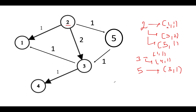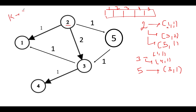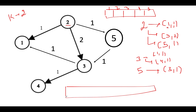Along with the priority queue, I'll create a visited array to track whether a node has been seen. We have five nodes, so the visited array has indices one through five. Assuming k equals two, we start iteration from node two. We add node two into the priority queue with a cost of zero, since we are already at the starting node.